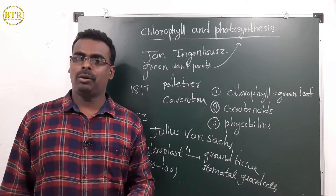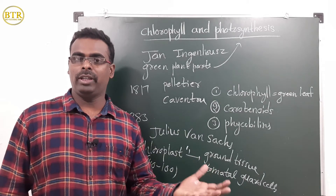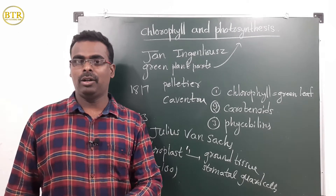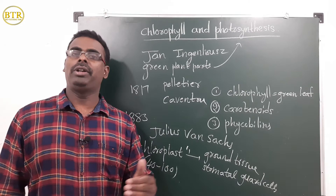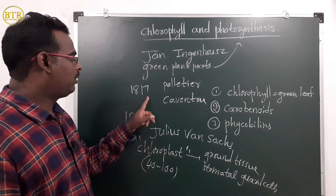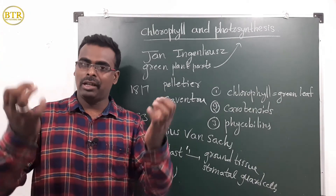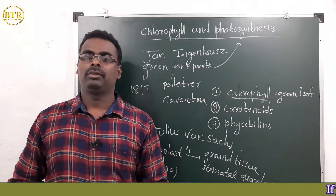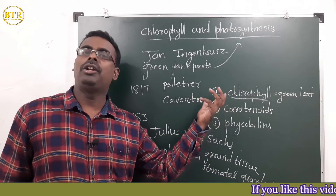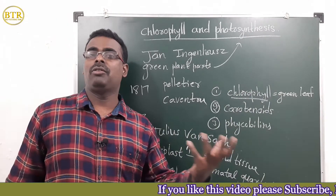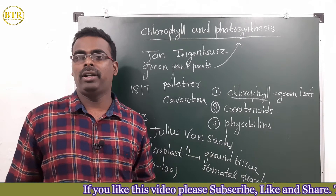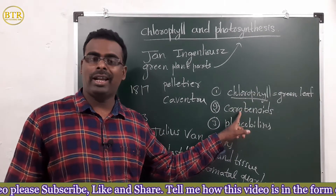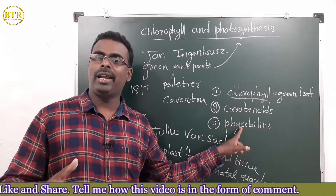To summarize: John Ingenhouse proposed that only green plant parts carry out photosynthesis, which raised questions about differently colored leaves and green-colored animals. Four decades later, in 1817, Pelletier and Caventou extracted the green substance from leaves and named it chlorophyll, meaning 'green leaf.' Leaves appear in different colors due to the presence of three pigments: chlorophyll (green), carotenoids (orange and yellow), and phycobilins (red and blue).